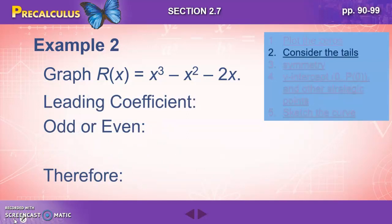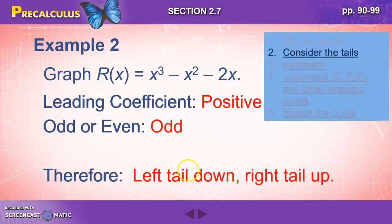Two, let's consider the tails. The leading coefficient is a positive number. And the degree, it's a third degree polynomial. That is an odd number. Therefore, based on what we know, left tail down and right tail up. So that overall kind of positive slope. So our graph should look something like this or close to that.